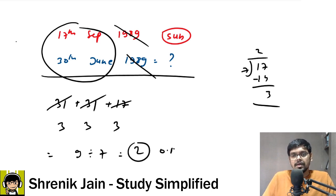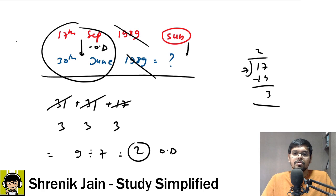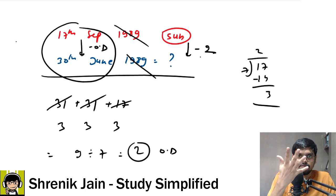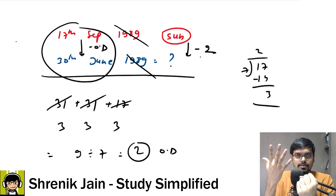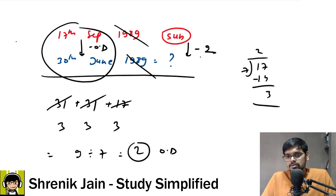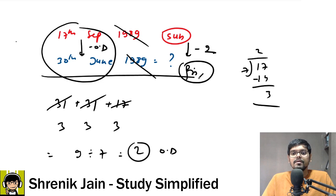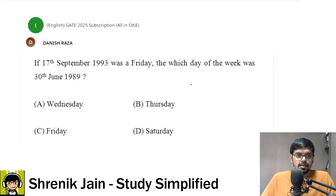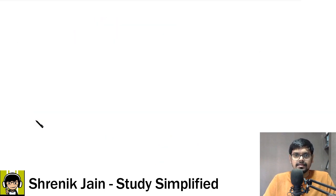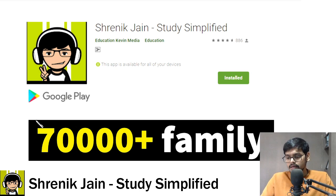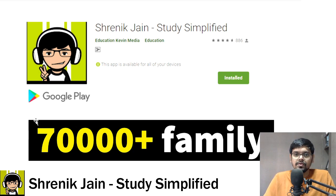9 divided by 7 gives a remainder of 2, so there are 2 odd days. Since we are going in the backward direction, we subtract 2. Starting from Sunday and going back two days: Sunday gone, Saturday gone — Friday is left. Therefore the answer is Friday, which is option C. That is the final answer — I hope you understood this trick of splitting the question to get the answer.